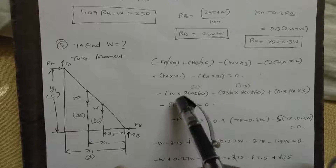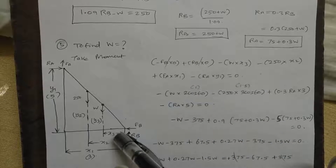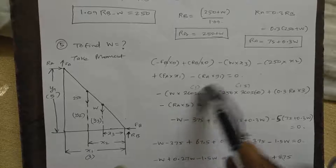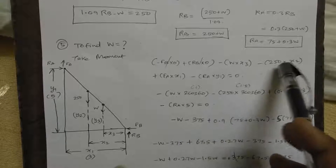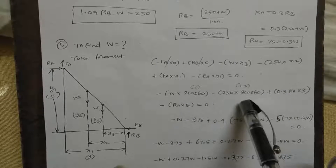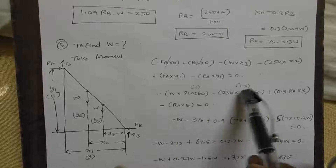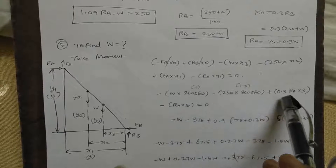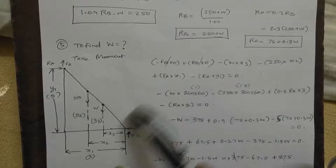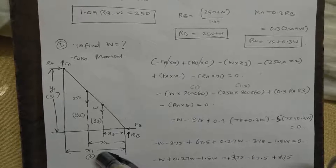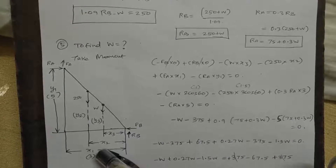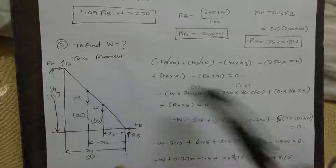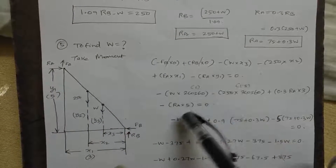The value of x3 is 2 cos theta. The value of x2 is 1.5 cos theta, which equals 1.5. The value of FA equal to 0.3 into RA. The value of x1 is 3. The y value is 5. So RA into 5.